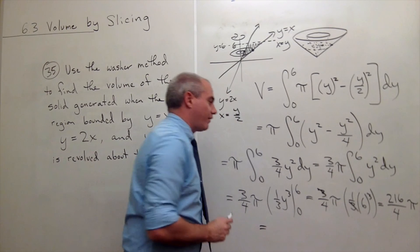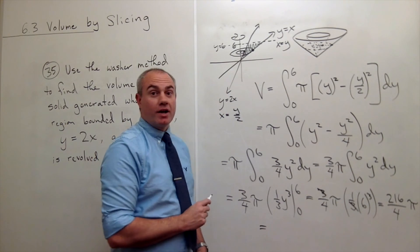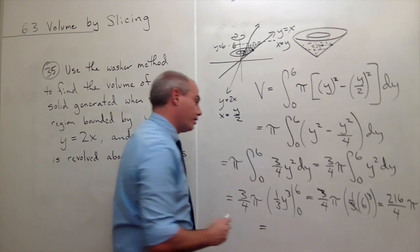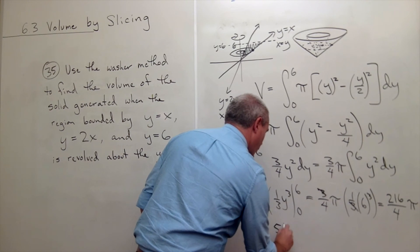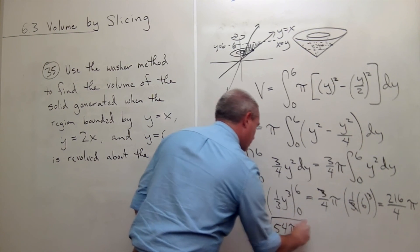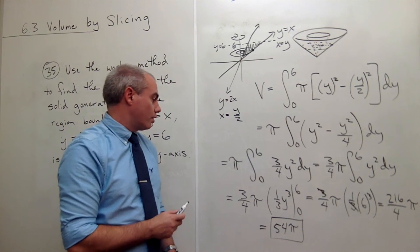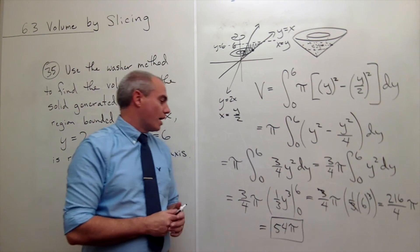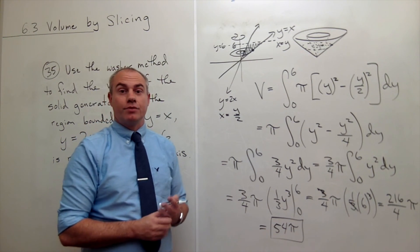216 divided by 4 is otherwise known as 54. So this would be 54 pi. And we are done. So this is my volume in cubic units.